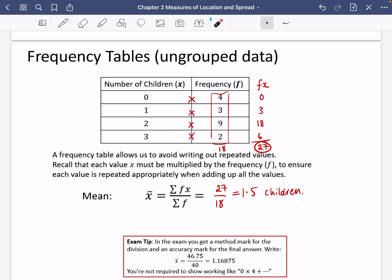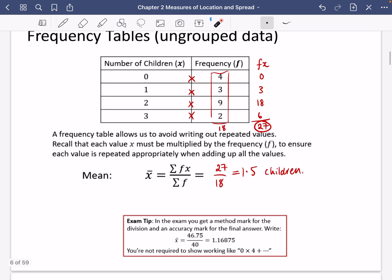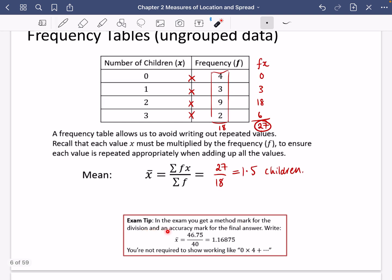So there's a bit of an exam tip here, because in an exam, you will get a method mark for the division and an accuracy mark for the final answer. So all you really need to do is this bit here. And then for the final answer, you don't need to show that you did the zero times four, the one times three, you can actually just go straight to this bit here.